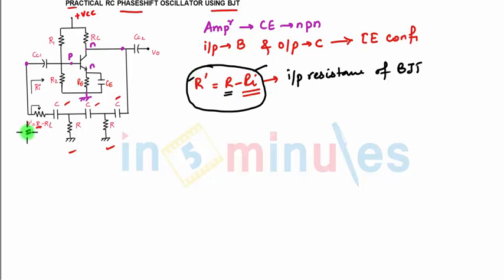So we'll get the resistance as R dash over here. You have RC from where we are taking the output as collector. Now for the AC equivalent circuit, what we do is remove capacitors, that is short circuit the capacitors.